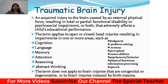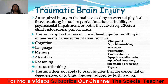A traumatic brain injury is defined as a blow to the head or a penetrating head injury that disrupts normal functioning, affecting a person's ability to think or behave normally. It occurs when the head suddenly and violently hits an object, or when an object pierces the skull and enters the brain tissue. Symptoms can be mild, moderate, or severe depending on the extent of brain damage — mild causes a brief change in mental state or consciousness, while severe cases can result in unconsciousness, coma, or even death.